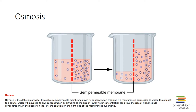Osmosis is a special type of diffusion that refers to water. It is the movement of water — the solvent — across a selectively permeable membrane. Water diffuses through the plasma membrane or lipid bilayer, generally through channels called aquaporins. Water goes from an area of low solute concentration to high solute concentration, as shown in the diagram.